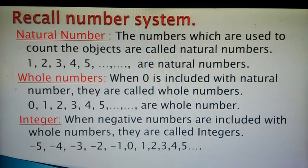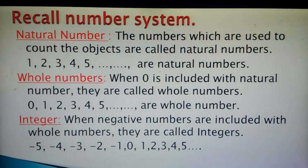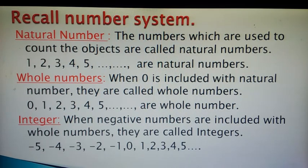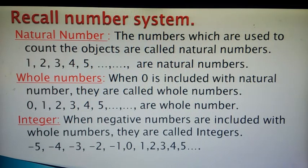The next number we are going to discuss is whole number. When we include 0 along with the natural numbers, it becomes whole numbers. So whole numbers are 0, 1, 2, 3, 4, 5, 6, 7, and so on. Integers are also very important.